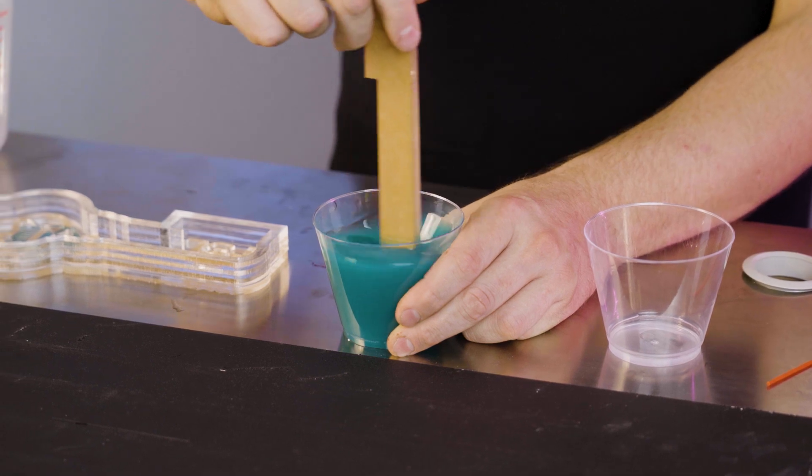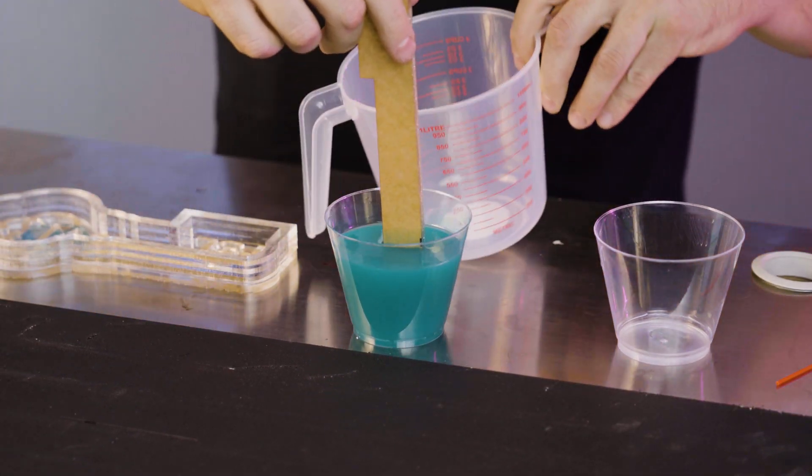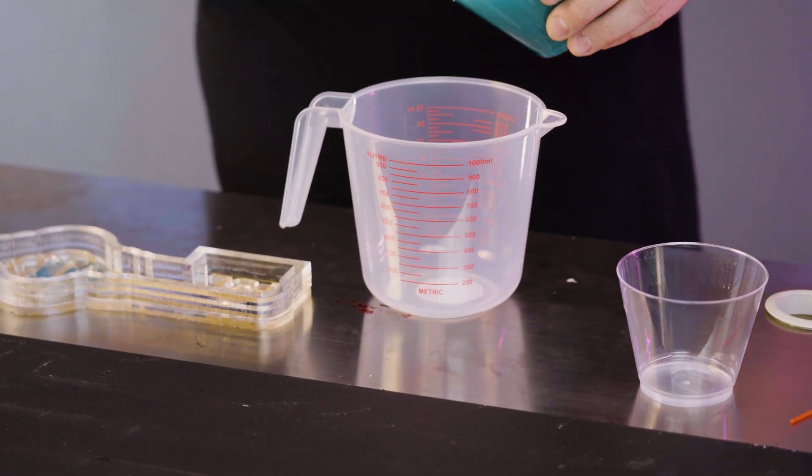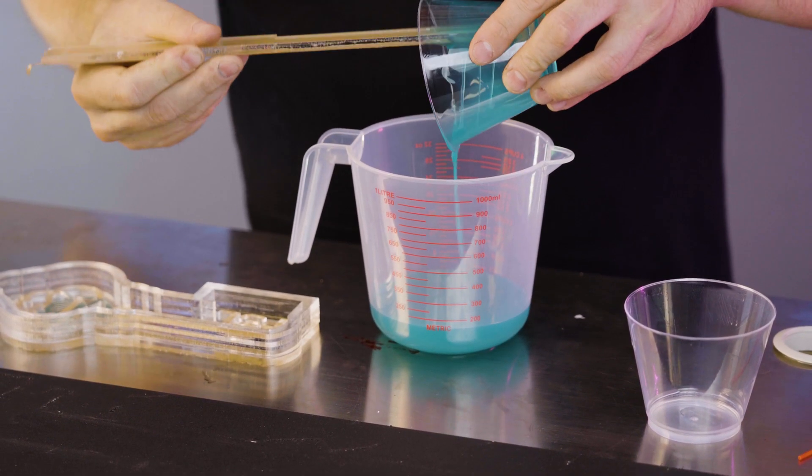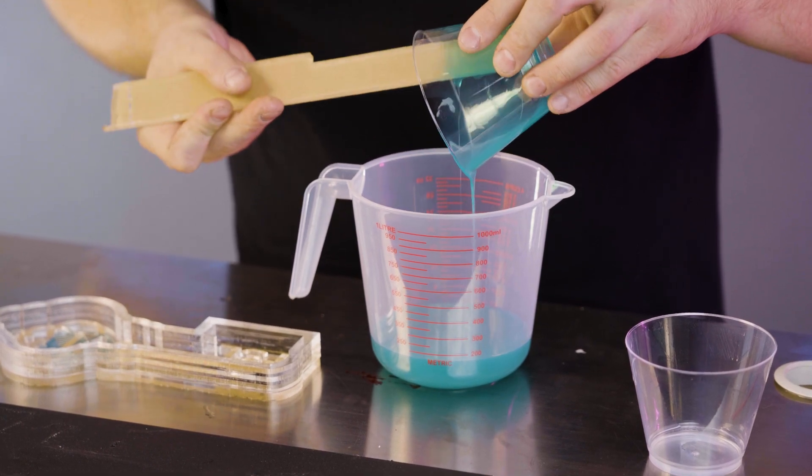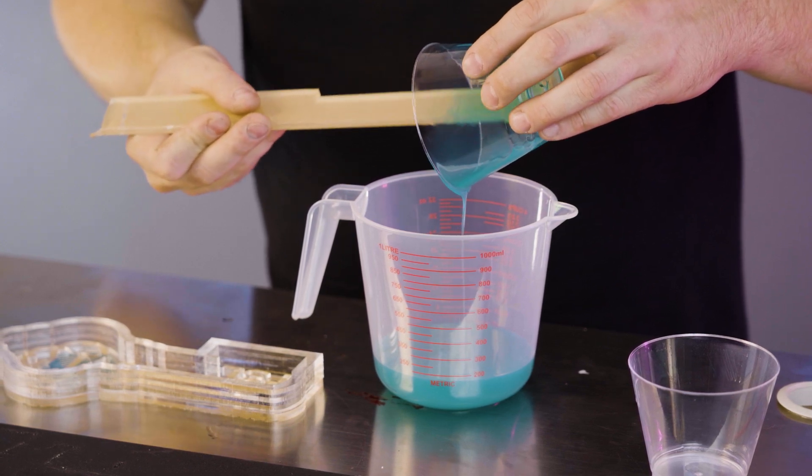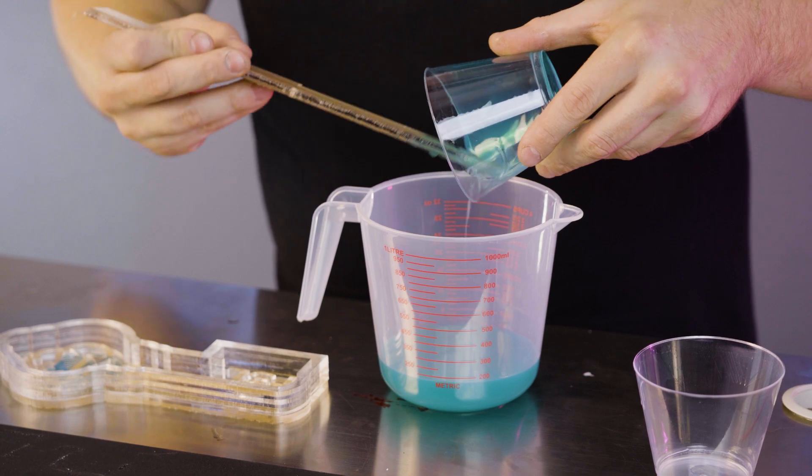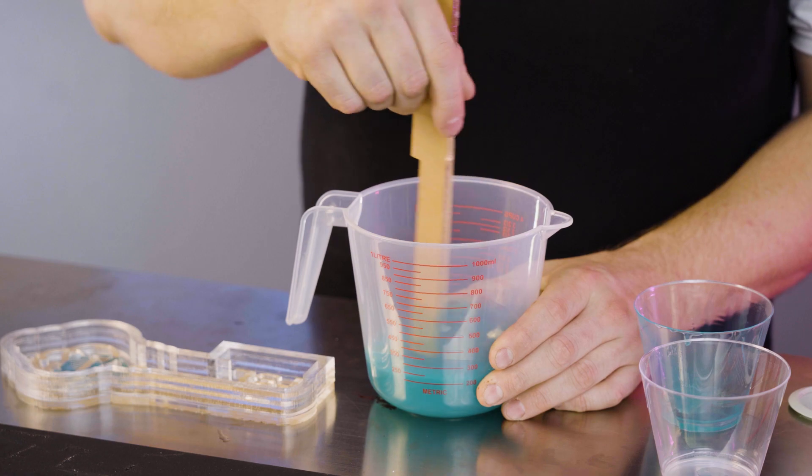After stirring enough, it's been about five minutes. We're going to take our other cup and pour it in. And then again, get all the excess silicone off the edges. This helps get all that stuff back to the top of our bucket. And then we can stir a little bit more in here.